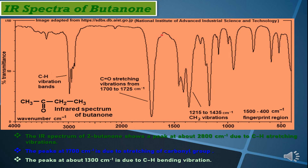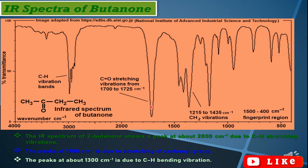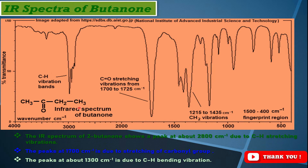Now we have the IR spectra of butanone. This is the structure of butanone — a four-carbon ketone. If you see the second position, you have a carbonyl group.